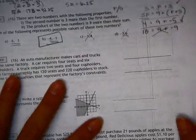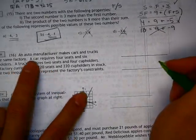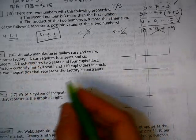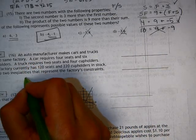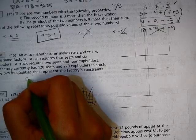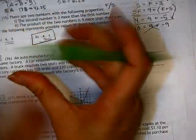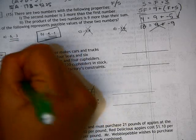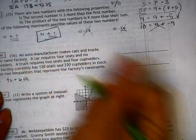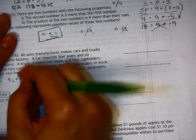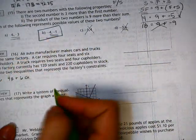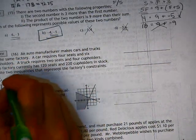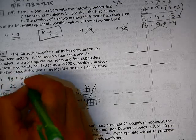Alright, so we have one more inequality to do here, under 16. So let's see. A car requires 4 seats and 6 cup holders. So a car, we've got a car, which requires 4 seats and 6 cup holders. Wow, maybe if I just did S for seats, that would work better. Seats and cup holders. And we have a truck requires 2 seats and 4 cup holders.